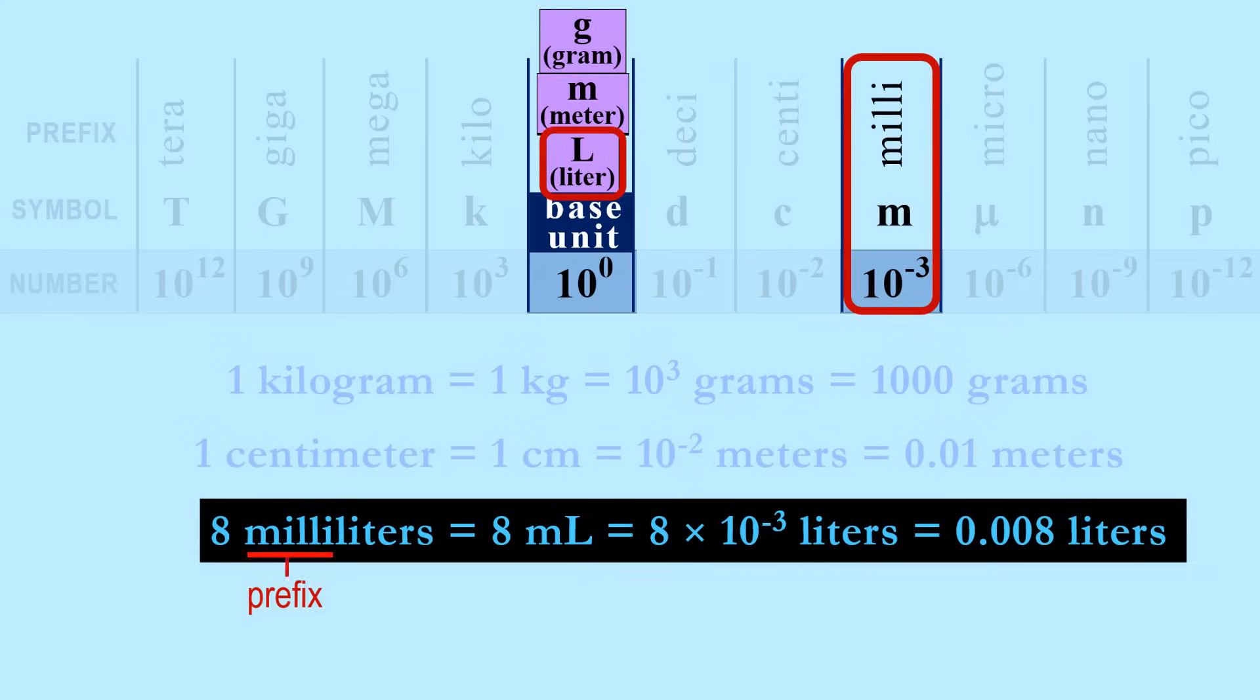Lastly, it is very important to note that any number can be expressed using prefixes. Putting an 8 in front of millimeter gives us 8 millimeters, or 8 ml, which represents 8 times 10 to the negative 3 liters, or 0.008 liters.